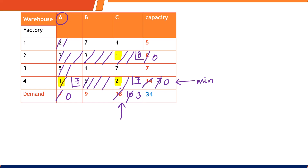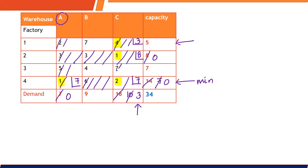Find the next least cost. Remaining costs are 7, 4, 4, and 7. The minimum is 4, and since there are two cells with cost 4, we take the first-come-first-serve basis. For this cell with cost 4, the demand is 3 and the capacity is 5. The minimum is 3, so we allocate 3 units. The demand at that destination is fulfilled and becomes 0, while capacity reduces from 5 to 2.